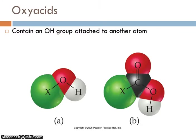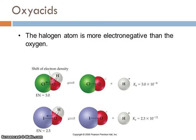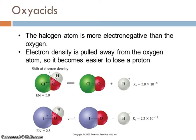Oxy acids are a class of acids that contain an OH group where the O is attached to some other atom. In example A, the O is attached to a halogen; in example B, the O is attached to a carbon, so that's a carboxylic acid. The halogen atom is more electronegative than the oxygen, so electron density is pulled away from the O-H bond toward the halogen atom, making it easier for the hydrogen ion to dissociate. In HOCl the Ka is on the order of 10 to the negative 8, while in HOI the Ka is on the order of 10 to the negative 11, since chlorine is more electronegative than iodine. So the more polar the bond, the easier it is for the acid to dissociate.